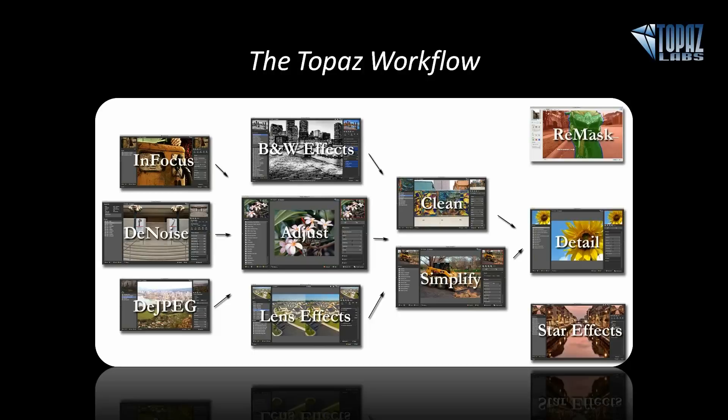Detail is something I always say you need to use last. It is an amazing output sharpener, and you can really add a lot of creative sharpening in there as well. But the majority of the time, Detail should come at the end of your workflow when you've already resized to the output size. So if you're resizing your image for the web, you'd take it into Detail and use it as an output or creative sharpener. That said, some people like to do creative sharpening in the middle of their workflow and then use Detail again at the end for output sharpening.